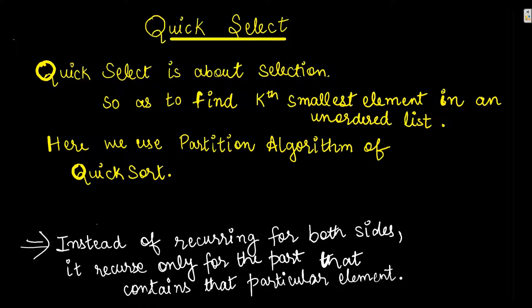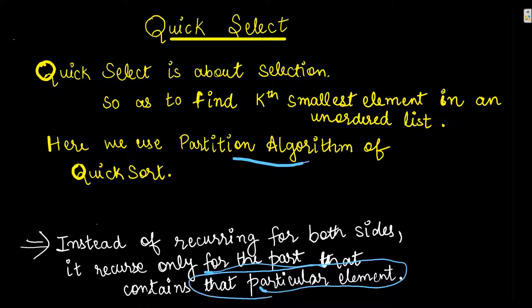First of all, the question arises: what is Quick Select? Quick Select is about selection — specifically to find the kth smallest element in an unordered list. Quick Select is not directly related to Quick Sort; we only use the partition algorithm from Quick Sort. In Quick Sort we recurse for both sides, but in Quick Select we need to recurse only to that part which contains our particular element.